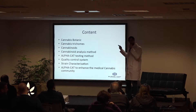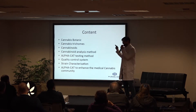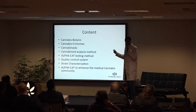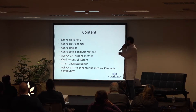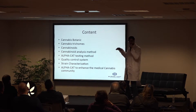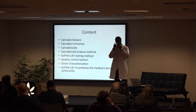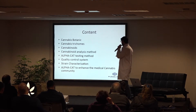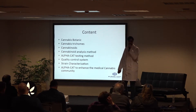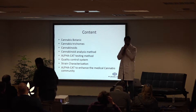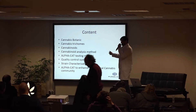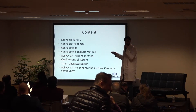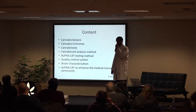We're going to go through the basics of cannabis, which most of you might know already. We'll cover the botanics, the cannabis trichomes, and how to analyze the cannabinoids inside the trichomes, because the trichomes produce all the secondary metabolites — cannabinoids, terpenes, sesquiterpenes, and so on. We'll talk about quality control systems for production standardization and strain characterization, and finally explain how this information suits a medical cannabis program as a state of the art.